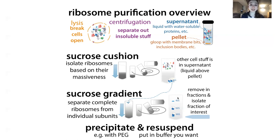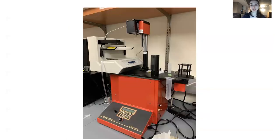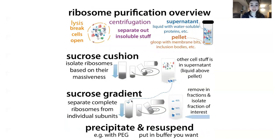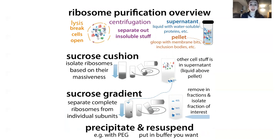To separate the complete ribosomes from individual subunits, you can use a sucrose gradient — here you're using a continuous gradient. You get this gradient using the gradient maker. What's going to happen is these will separate out because they have different densities. With the sucrose cushion it was more like a yes or no — are you dense enough? But here you get more options because as you go down the solution, there are higher and higher concentrations of sucrose, making it denser, so things separate out more finely.